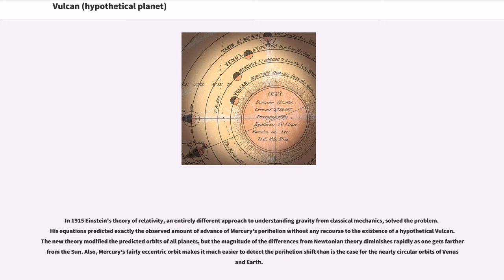The new theory modified the predicted orbits of all planets, but the magnitude of the differences from Newtonian theory diminishes rapidly as one gets farther from the Sun. Also, Mercury's fairly eccentric orbit makes it much easier to detect the perihelion shift than is the case for the nearly circular orbits of Venus and Earth.